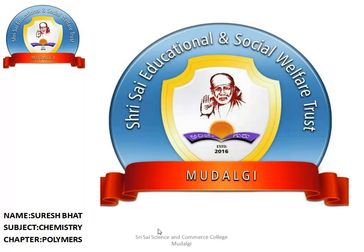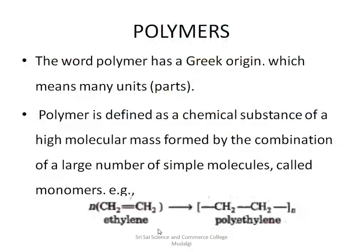Let us begin with the concept of polymers. The word 'polymer' is of Greek origin, which means many units or many parts. So many parts or units are joined together to form polymers. As the name indicates, 'poly' refers to many and 'mers' refers to units or parts. A polymer is defined as a chemical substance of high molecular mass.